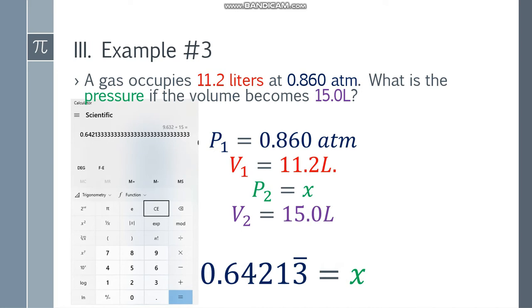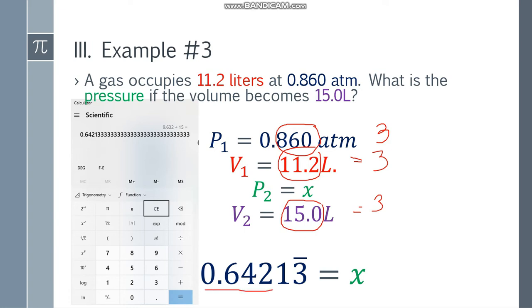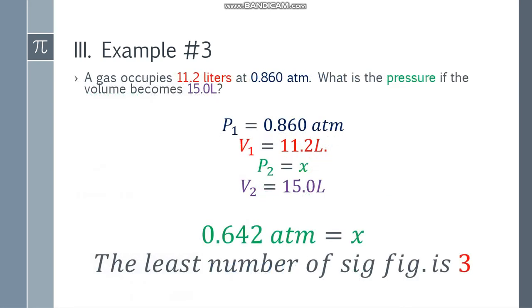For the final answer, let's check the significant figures. 0.860 has 3, 11.2 has 3, and 15.0 also has 3 significant figures. So the answer is 0.642. Since the next digit is 1, we do not round up — no rounding needed. The final answer is 0.642 atmosphere.